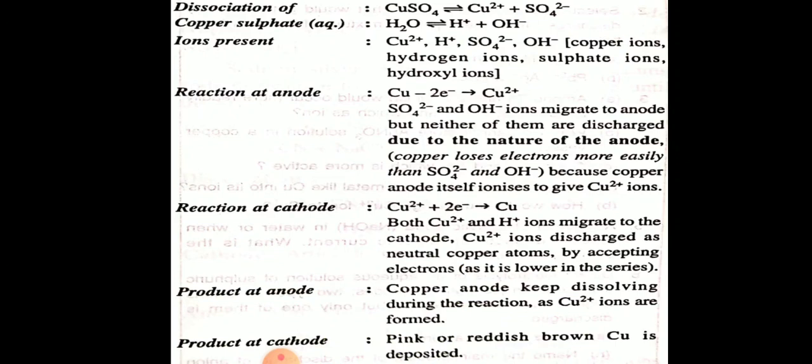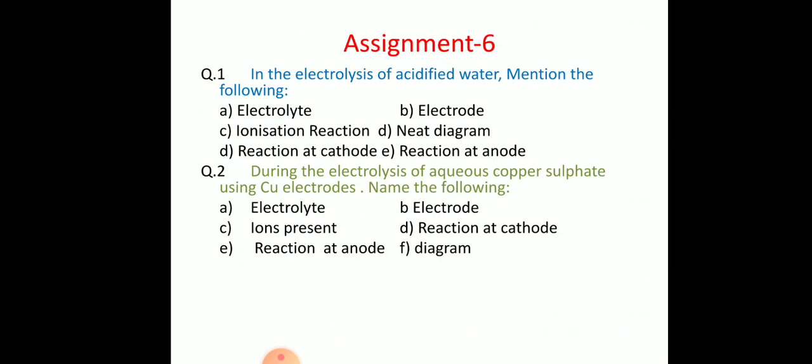At the cathode, pink or reddish-brown copper is deposited. This is the observation. Today's assignment: for electrolysis of acidified water, mention the electrolyte used, electrode, ionization reaction, draw a neat diagram, and state the reaction at cathode and anode. For electrolysis of aqueous copper sulfate solution using copper electrodes, name the electrolyte, electrode, ions present, reaction at cathode and anode, and draw the diagram. Complete and send it by email.